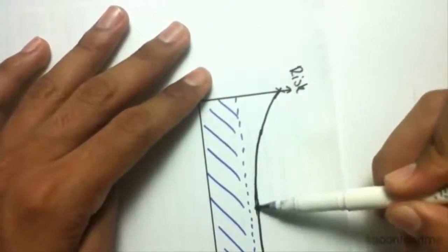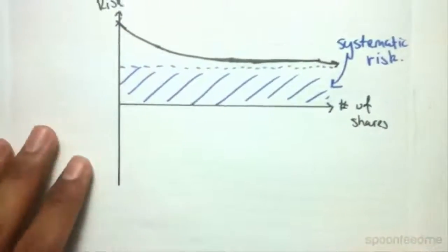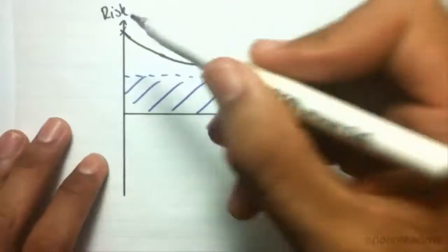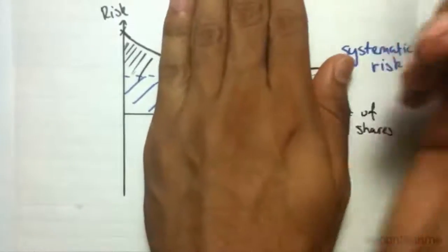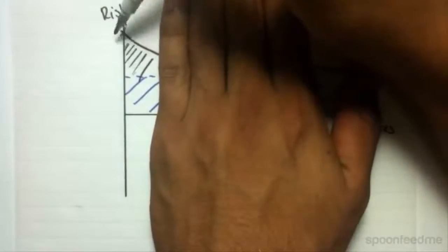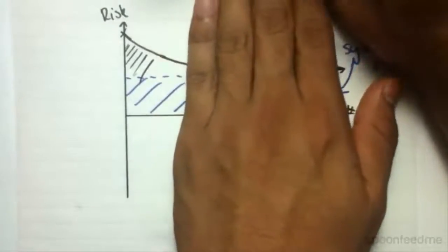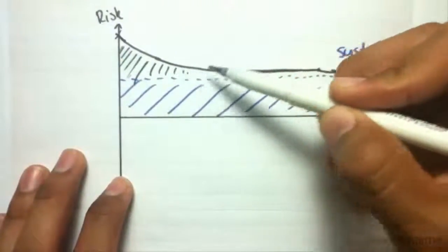And it will decrease asymptotically. That's not a very nice curve, not nice and smooth, but I hope you get the point. As you see, when the number of shares is small, I do have quite an identifiable degree of unsystematic risk, but as the number of shares increase and increase and increase...